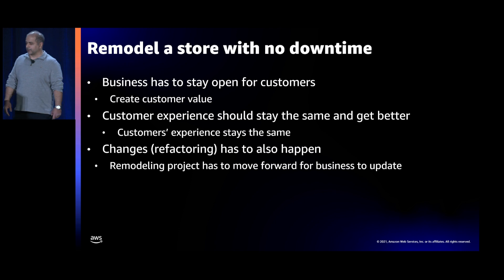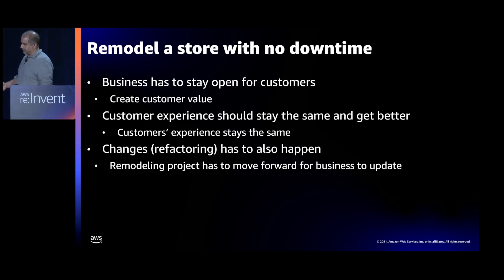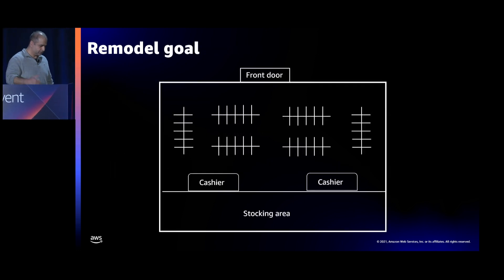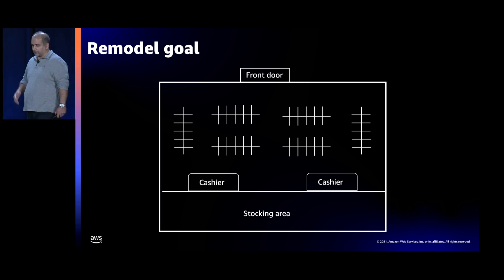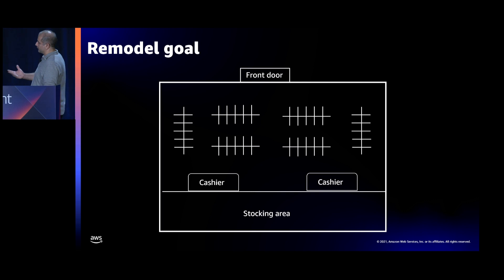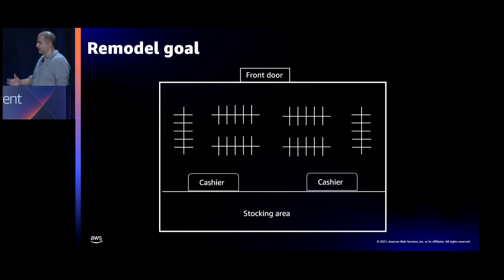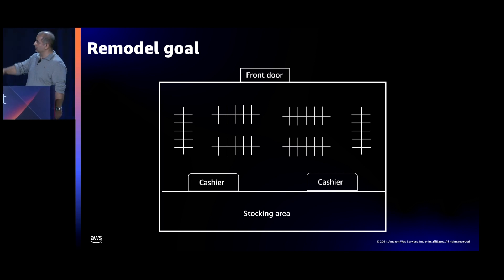The same concept applies to applications. I have to start thinking about what the different roles are going to be. I'm going to separate things by domain or by function or capabilities within my application — think of it as my store. I have a front door, but now I want to remodel. I'll have more shelves, more products, more cashiers, and a larger stocking area to support more customers. How do I do this without reducing but actually enhancing the customer experience — for any consumer of my application?